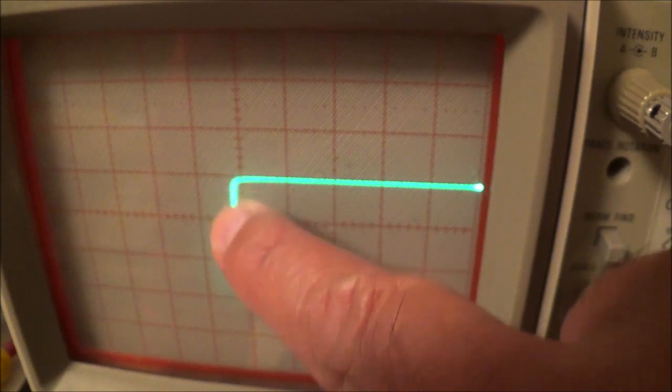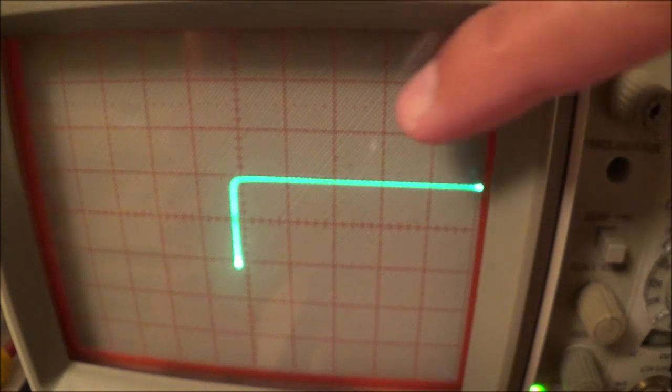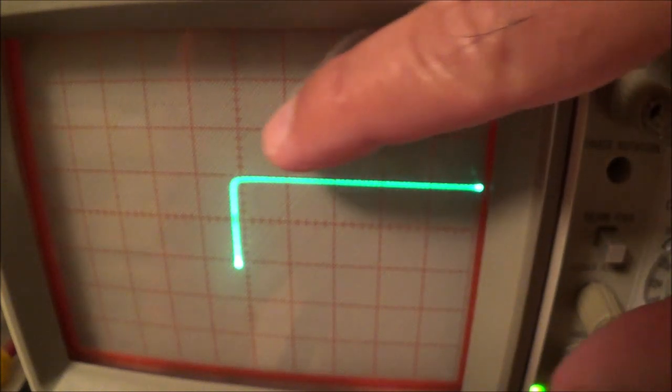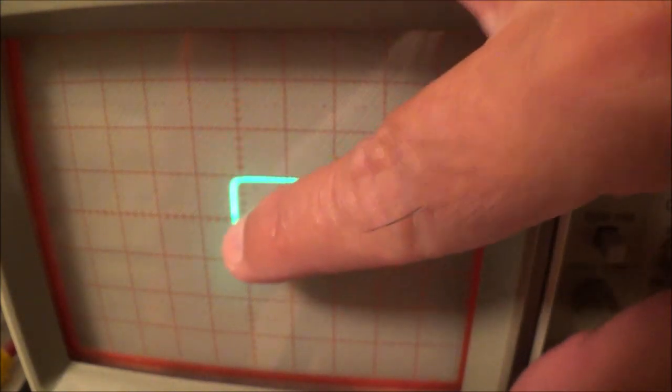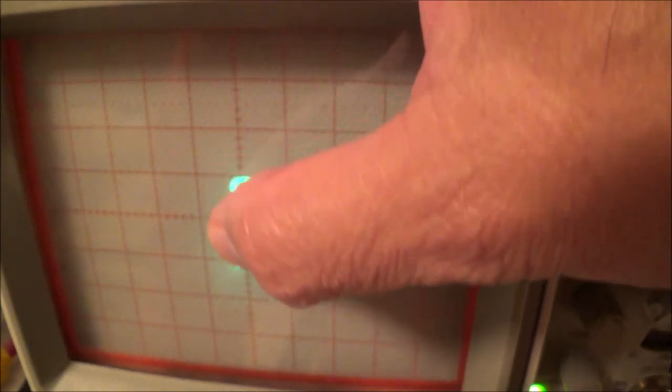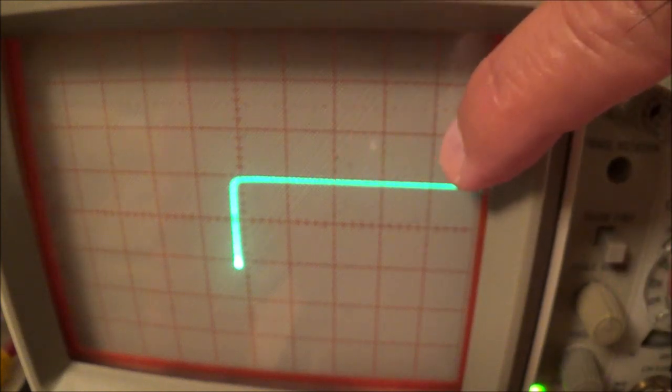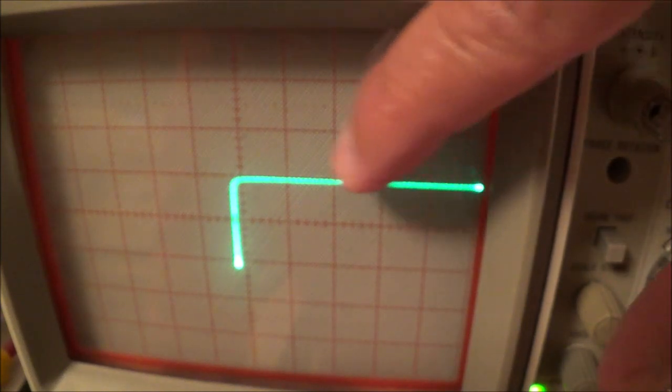What we want to have is a 90 degree turn. Nothing happens until here, boom, and then it starts conducting. Remember the diode is hooked up in reverse. From this flat line to here nothing at all is going on, but once we reach 5.1 volts, boom, then it's going to start conducting.